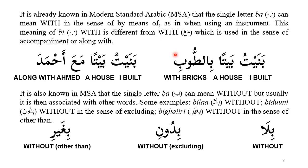You can see the difference between Ba and Ma in the following two sentences. 'Banaitu bayta bil-ajur' means 'I built a house with bricks,' i.e., by means of bricks. Then the sentence 'Banaitu bayta ma Ahmad' means 'I built a house along with Ahmad' — this is accompaniment, not means.